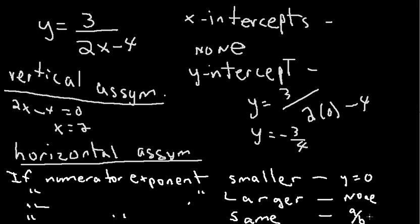Hello, let's talk about graphing rational functions. Here we have an equation, a rational function y equals 3 divided by 2x minus 4. Basically the way you graph this, you want to look at a few main concepts to graph this.